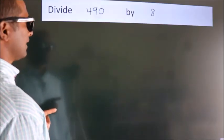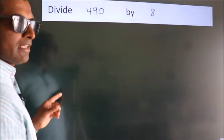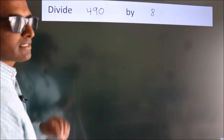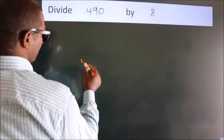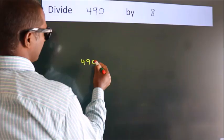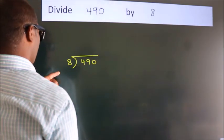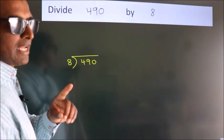Divide 490 by 8. To do this division, we should frame it in this way. 490 here, 8 here. This is your step 1.